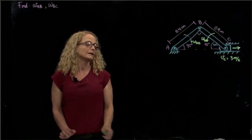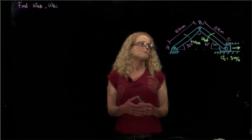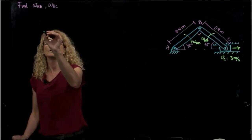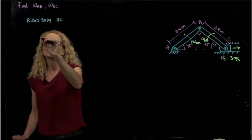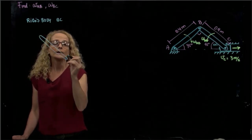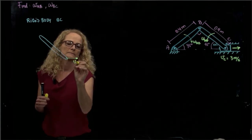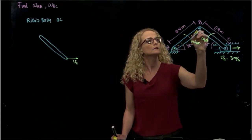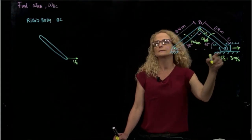So what is the concept of instant center of rotation? There are different ways to find it. One of them is connecting the two perpendiculars to the velocities of one rigid body. For example, we have rigid body BC right here. We know that the velocity of C is in this direction, and since this is a fixed pin, the velocity of B has to be perpendicular to rod AB, and that perpendicular is in the same direction.